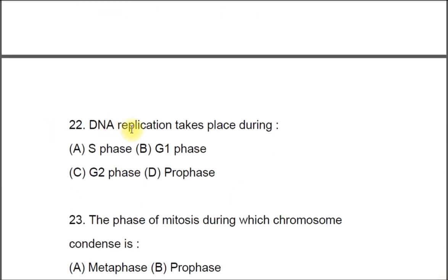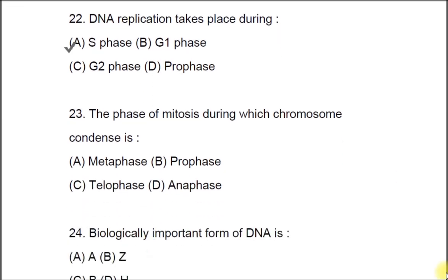Question 22: DNA replication takes place during A) S phase, B) G1 phase, C) G2 phase, D) Prophase. The correct answer is A, S phase. Question 23: The phase of mitosis during which chromosomes condense is A) Metaphase, B) Prophase, C) Telophase, D) Anaphase. The correct answer is B, Prophase.